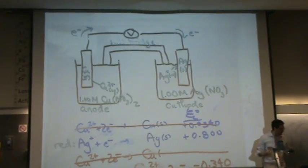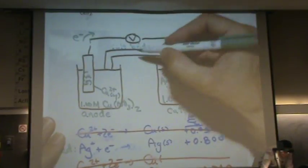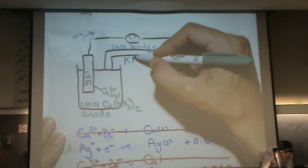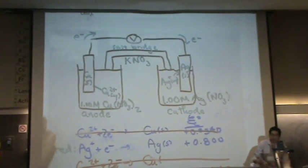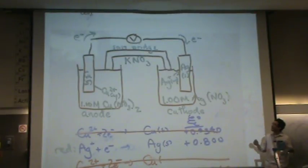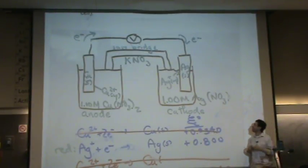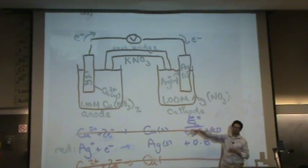The nitrate is essentially a spectator ion. It's part of the salt bridge. So because I already have an anion, I'm going to make the salt bridge KNO3. So whatever spectator slash salt they give me, in this case nitrate, I'm going to use in my salt bridge.